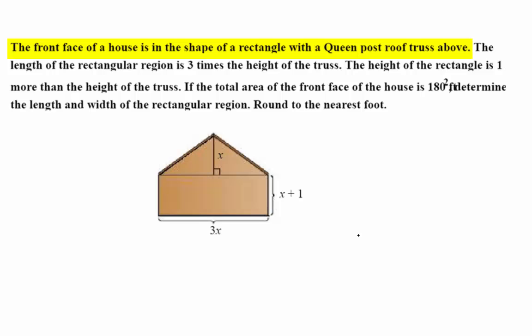It says the front face of a house is in the shape of a rectangle with a queen post roof truss above. So that just means a triangular shaped roof. The length of the rectangular region is three times the height of the truss. The height of the truss they have labeled as x. The base of the rectangular region they have labeled as 3x. So that's nice. They gave us the diagram.